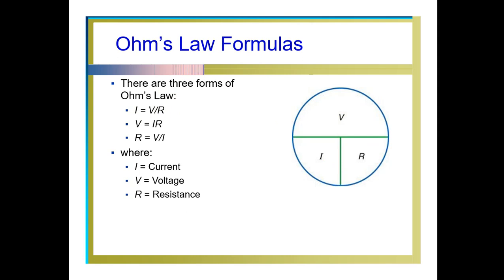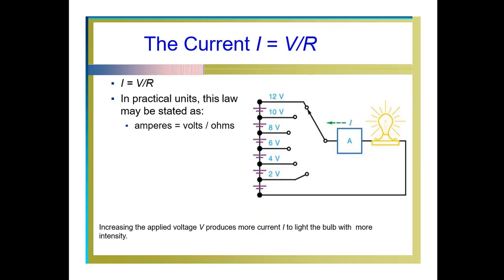When we replace the proportionality constant, V is directly proportional to I, so we get V is equal to R times I. From that we can write three equations: if you want to calculate I, then I equals V divided by R. If you want to calculate V, then V equals I times R. If you want to calculate R, then R equals V divided by I.